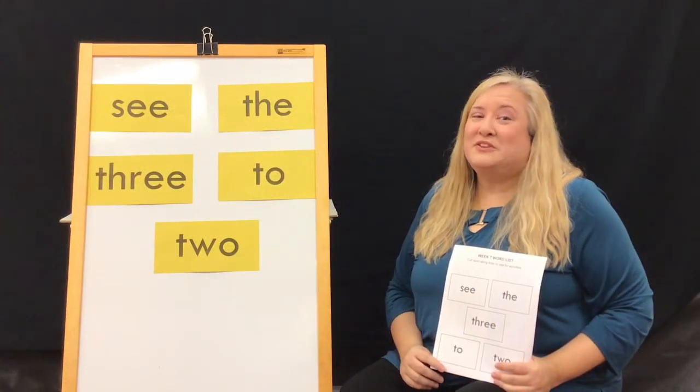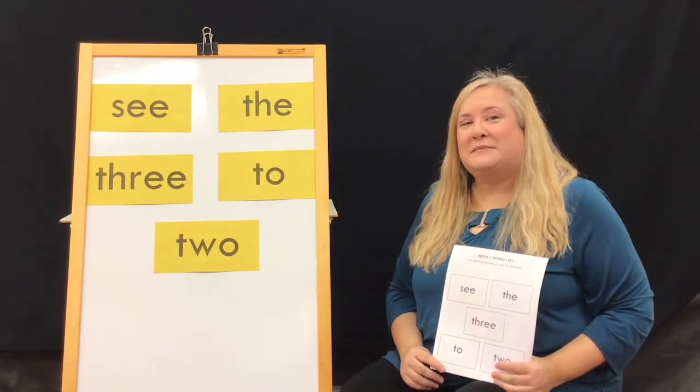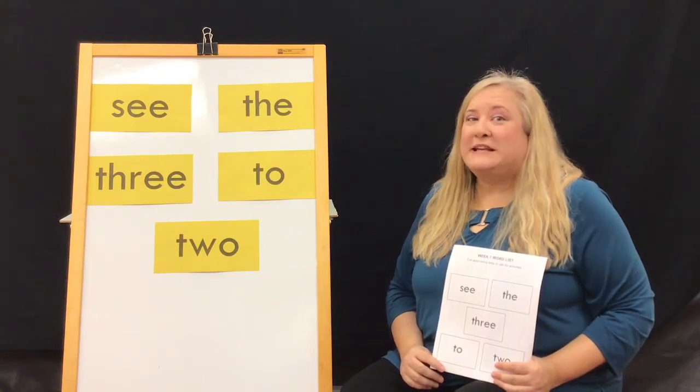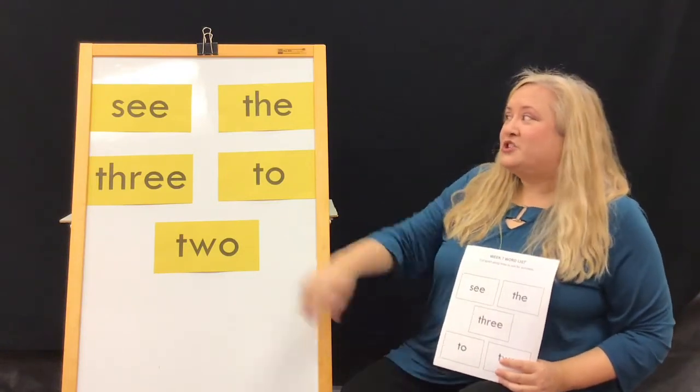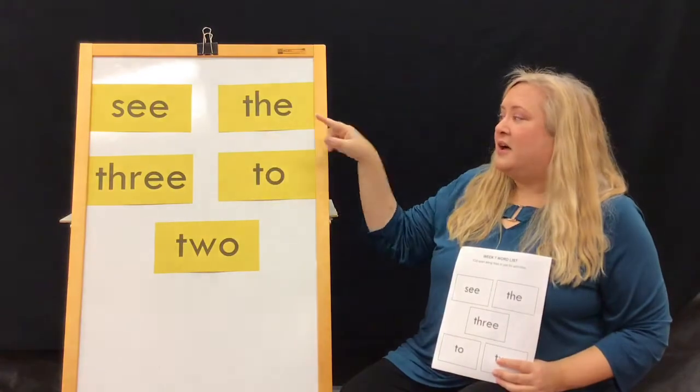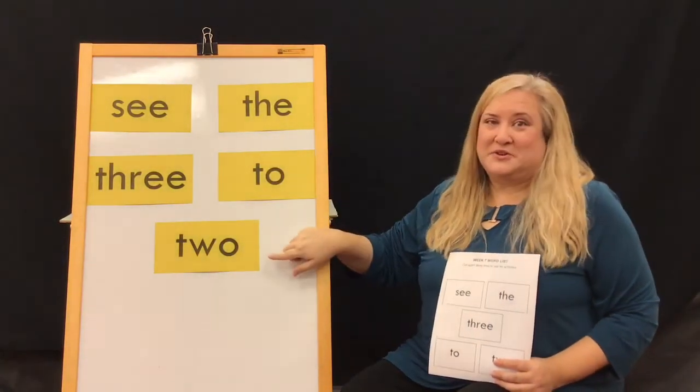Hi, I'm Miss Karen from the Volusia County Public Library System. This week we're going to go over week seven's sight words, which are see, the, three, two, and the number two.